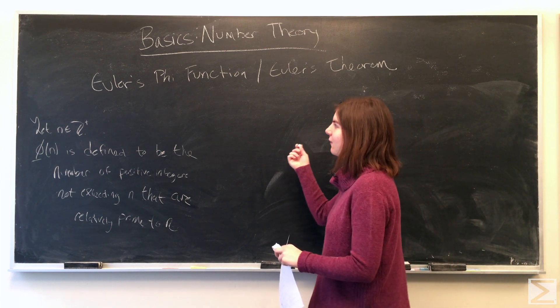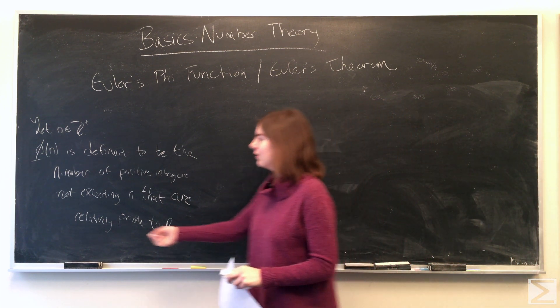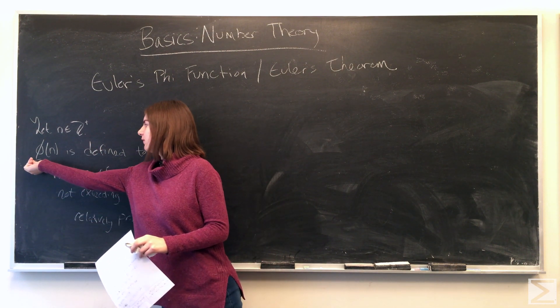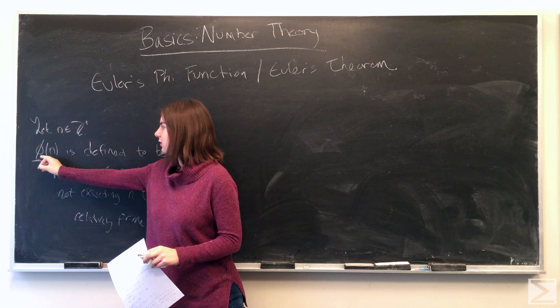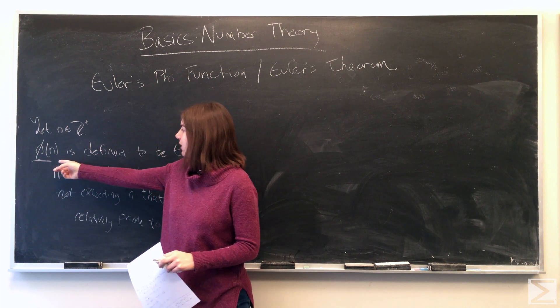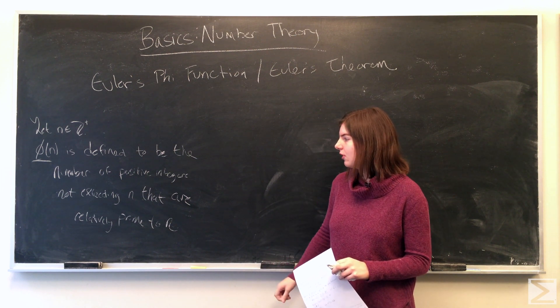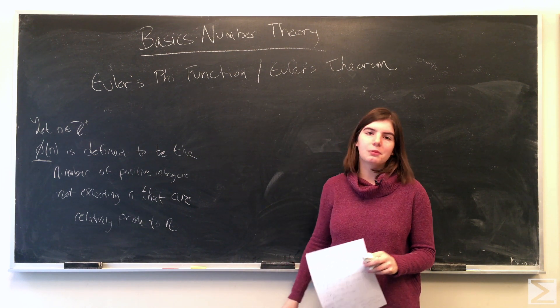The definition of the phi function is let n be a positive integer, and the function is denoted by the Greek letter phi. So phi of n is defined to be the number of positive integers not exceeding n that are relatively prime to n.